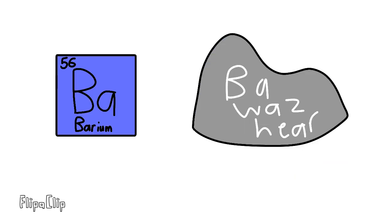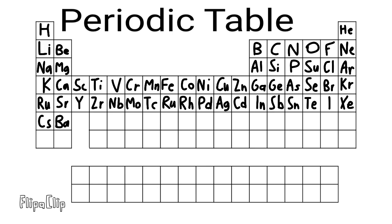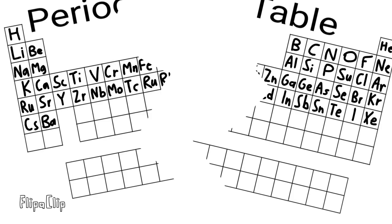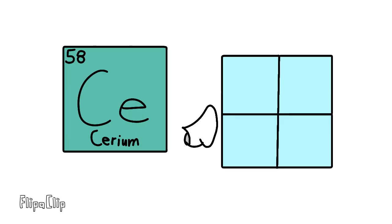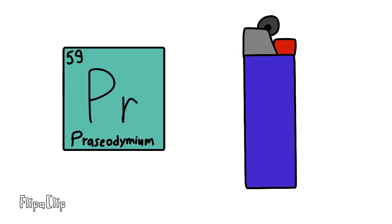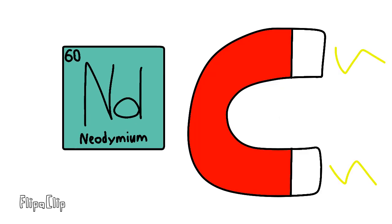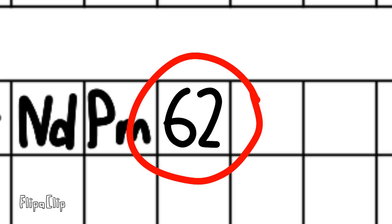Barium is 56, and this is where the table splits, where lanthanides have just begun, lanthanum, cerium, praseodymium, neodymium, next to promethium, then 62.